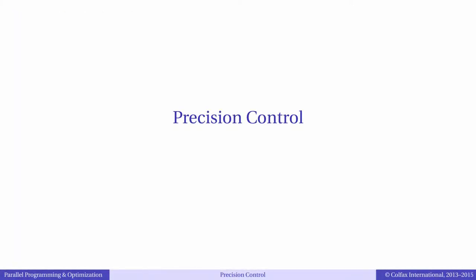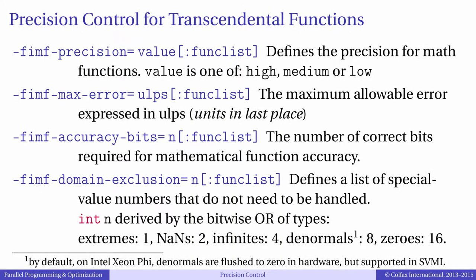Precision of transcendental functions may be controlled using compiler arguments. The easiest one to use is FIMF precision, which can take values high, medium, or low. The lower the required precision, the greater the performance.